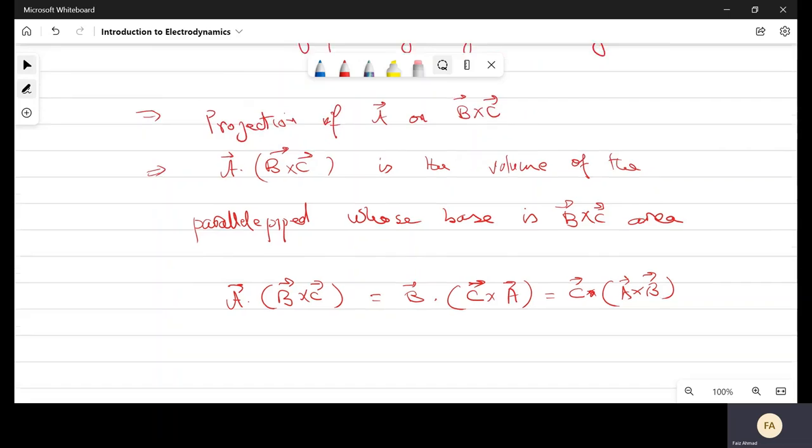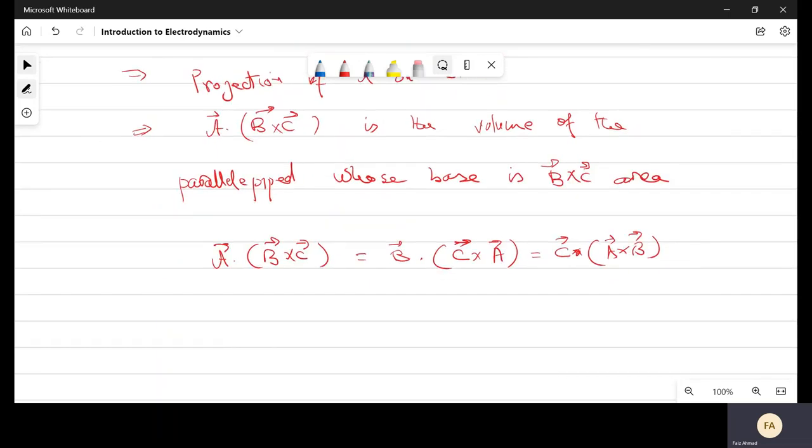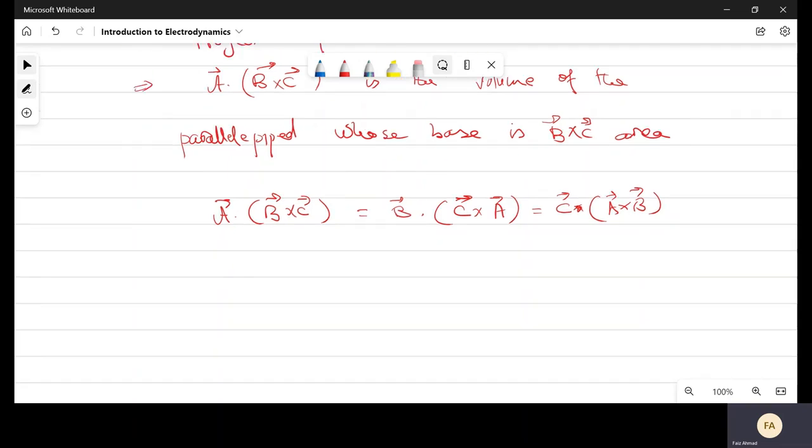We have to keep track of order. Here you can see A dot B cross C is equal to B dot C cross A. If we are going to take A cross C, then there will come a negative sign. And if we are going to reverse the order, then there will be a negative sign. We can write this in component form and it can be expressed in terms of a determinant.